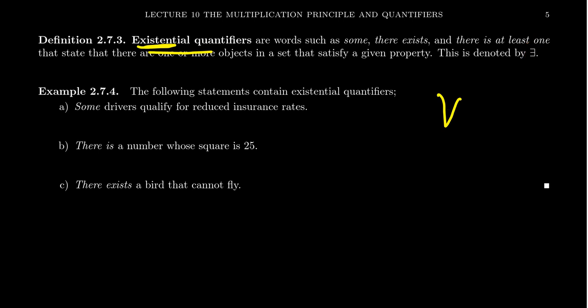But the other direction is not necessarily true — you could have some elements with a property but that doesn't mean everyone has it. For example: some drivers qualify for reduced insurance rates. It's not saying everyone does, because if there are any exceptions that would make it a false advertisement. 'Some' suggests you could qualify, but we're not sure — at least one exists.